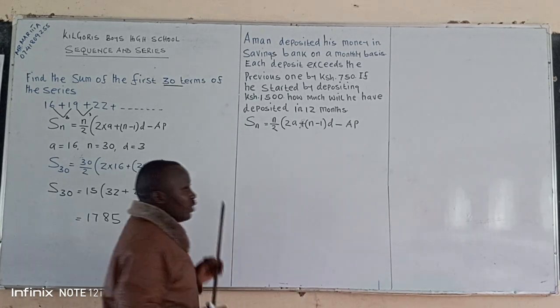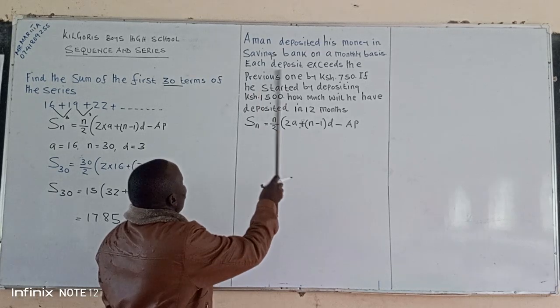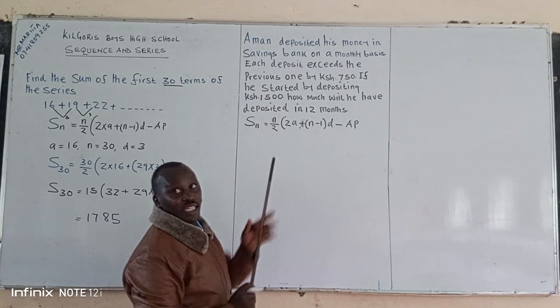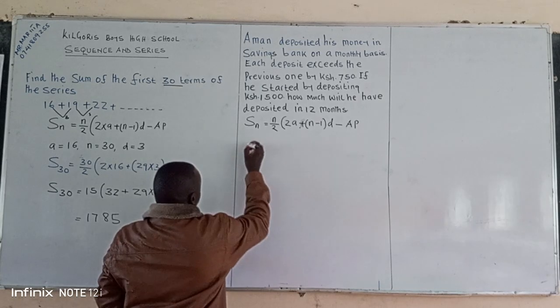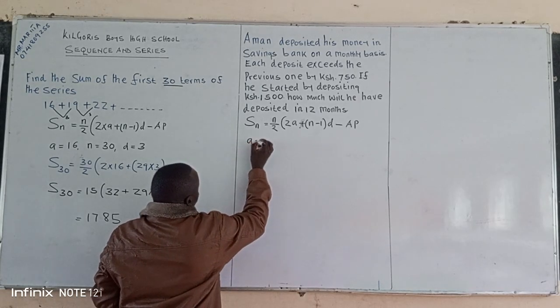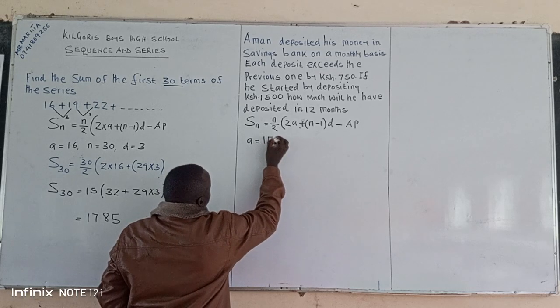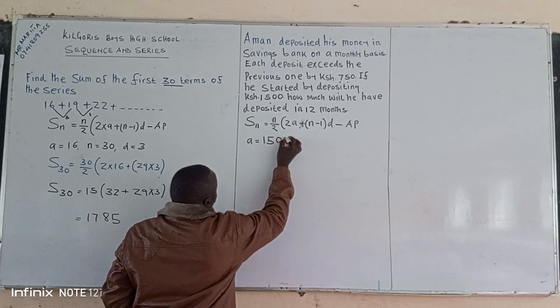So in that case, now we need to identify. A man started by depositing 1500, so the first amount is 1500. So we can have our a here is equals to 1500.